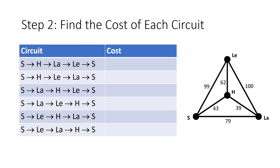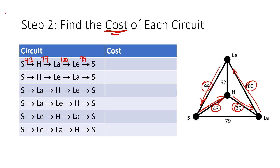Now we want to find the total cost of each circuit. The numbers on the graph indicate the miles between each pair of cities. For my first circuit, going from Shippensburg to Harrisburg costs 43 miles, Harrisburg to Lancaster is 39 miles, Lancaster to Lewisburg is 100 miles, and Lewisburg to Shippensburg is 99 miles. Adding those up — 43 plus 39 plus 100 plus 99 — works out to 281.